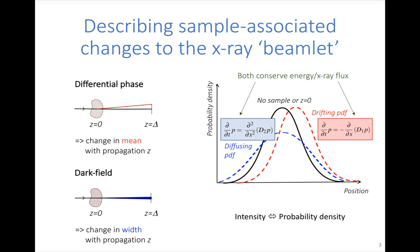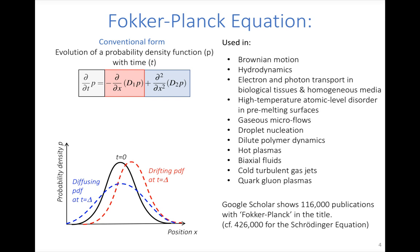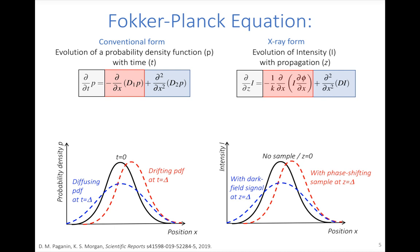When we have both diffusion and drift of the probability density function, this is described by an equation commonly known as the Fokker-Planck equation, which has been widely used across a range of fields. We can adapt it for the X-ray form as shown.